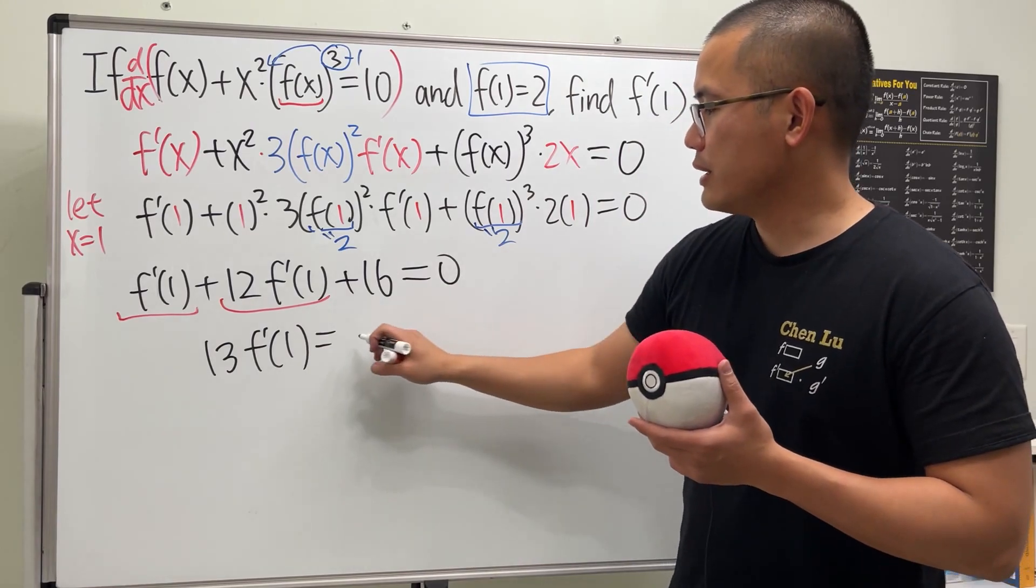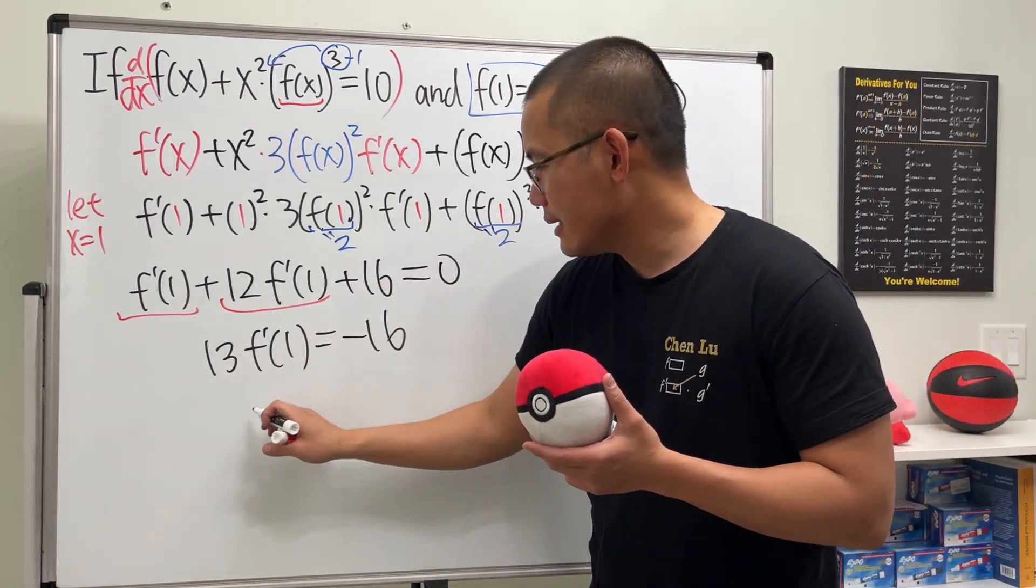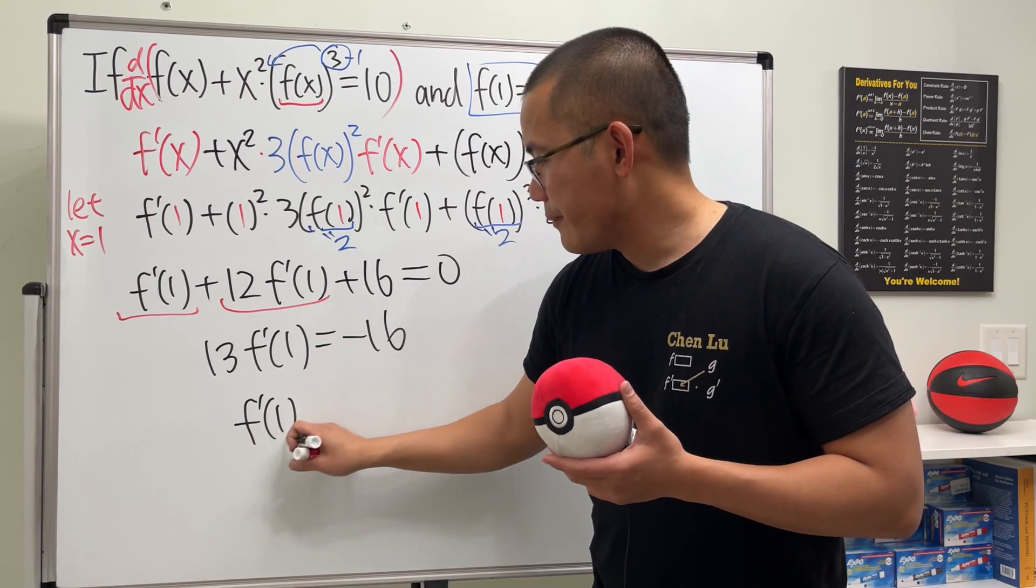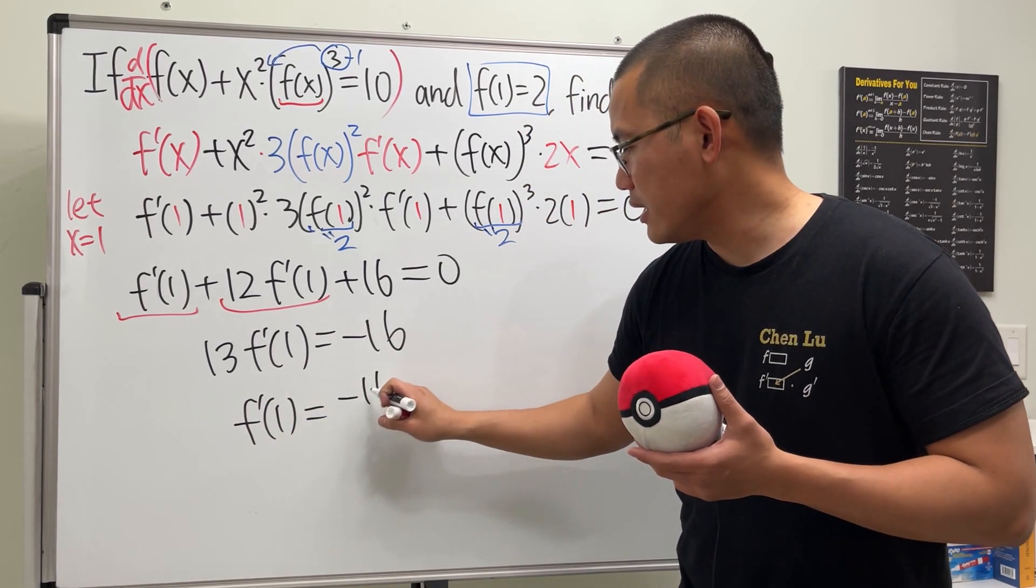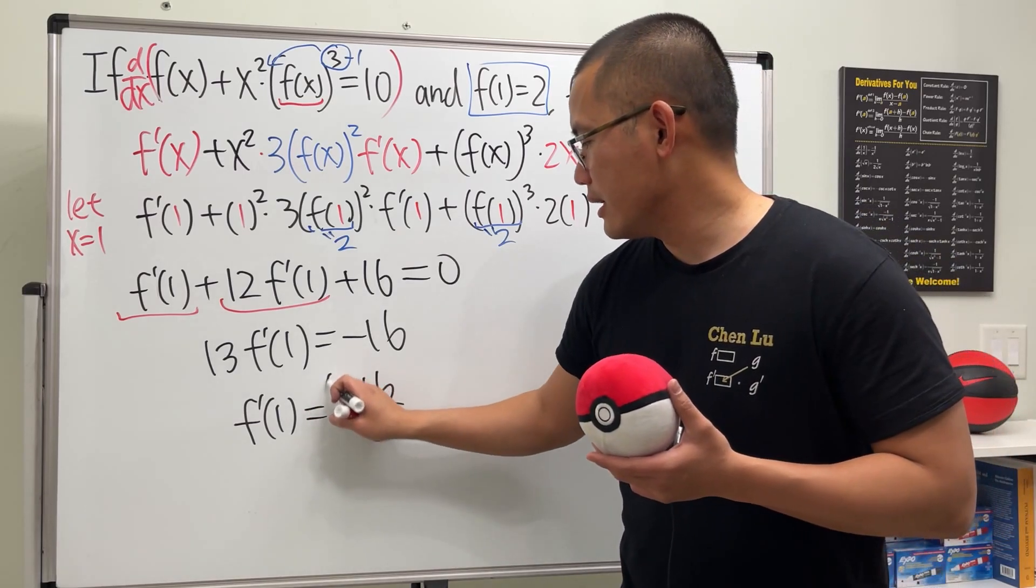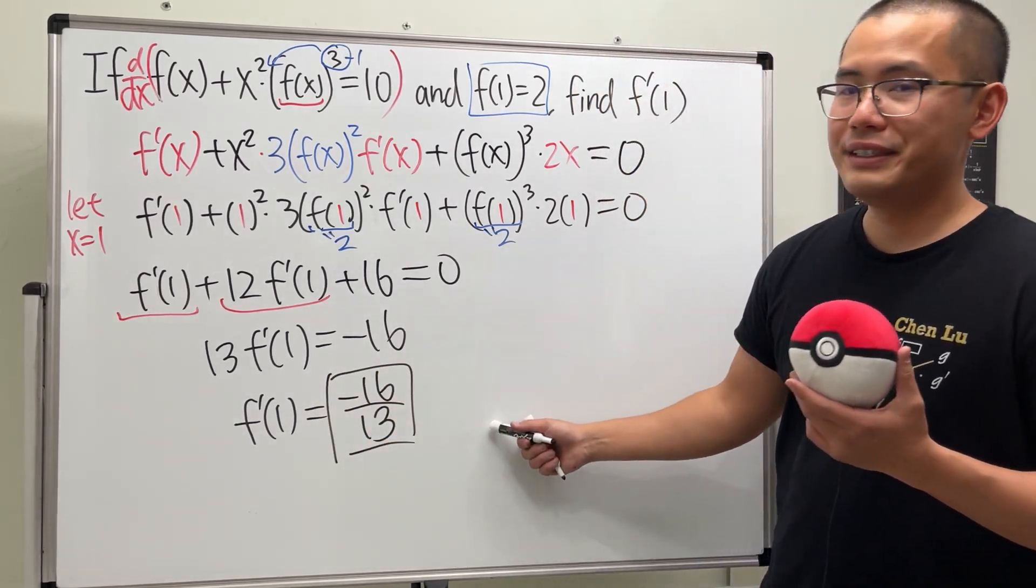And we can put this to the other side. And lastly, divide that. So ladies and gentlemen, f prime of 1 is equal to negative 16 over 13. And this right here is the answer.